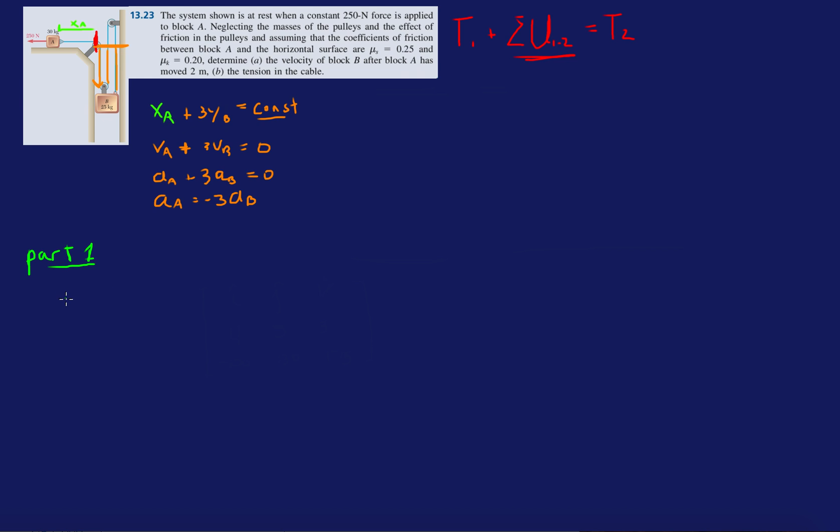Part one. Let's do block A. It has weight, it has a normal force, it's getting pulled with a 250 newton force. It's got a tension pulling it back this way. It's gonna have some friction. Because we're saying I'm assuming it's static equilibrium, I am going to say there's static friction. We're going to prove that it's actually moving. So we're going to say F_x equals zero because we're assuming static equilibrium again.